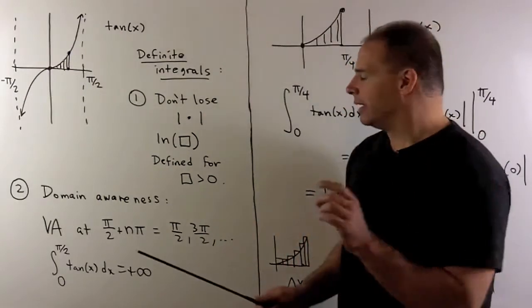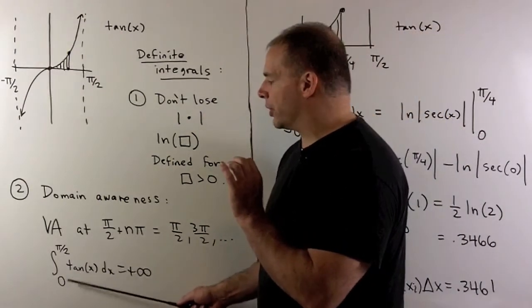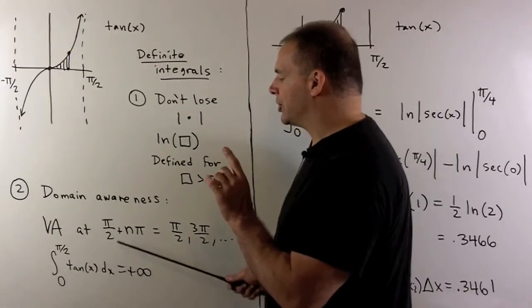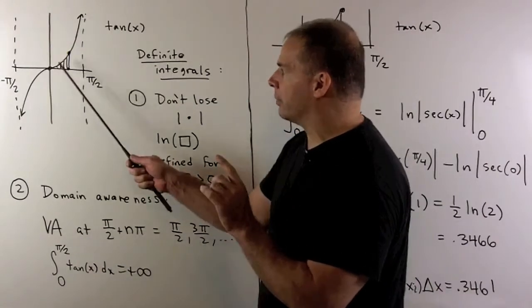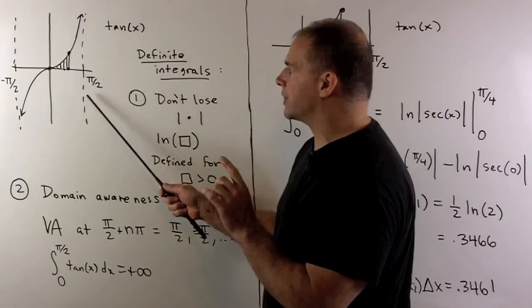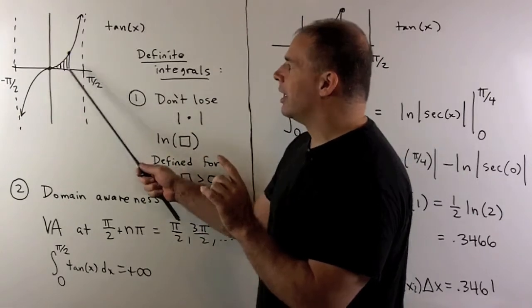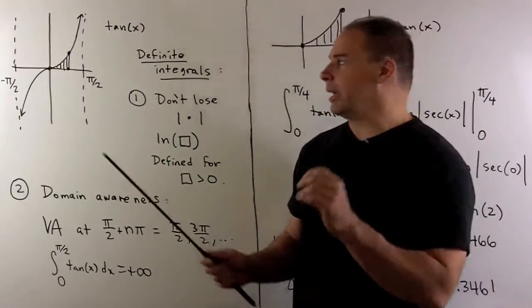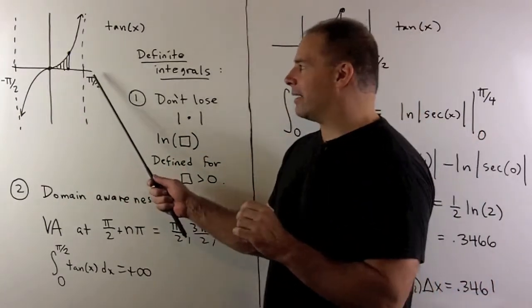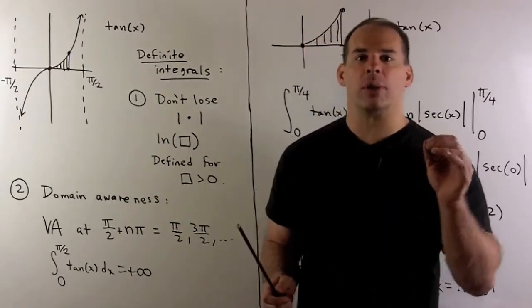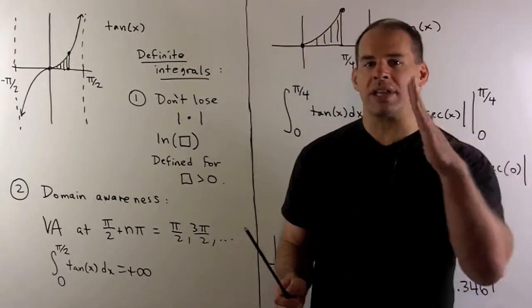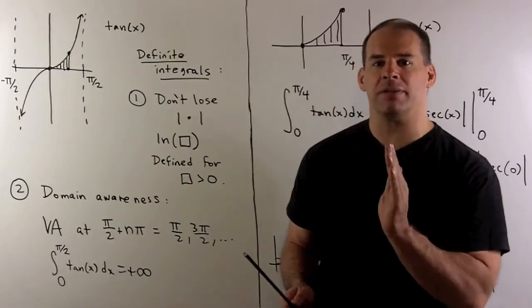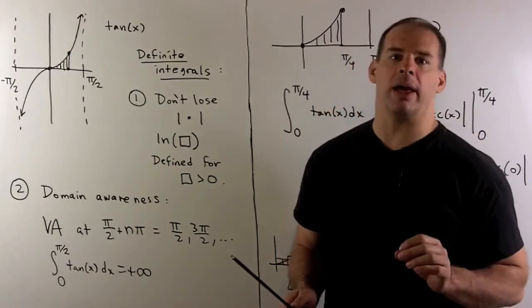In fact, if we take the integral from zero to pi/2, the area from here out to the vertical asymptote is going to be infinite. So if pi/2 ends up in the range that we're integrating over, on one side of pi/2 you're going to have positive infinity, and on the other side, negative infinity. And we don't want to think about that.